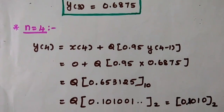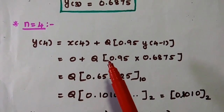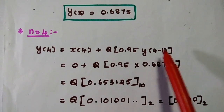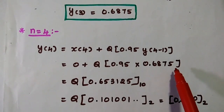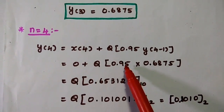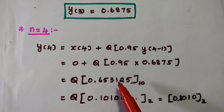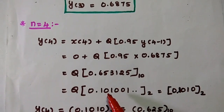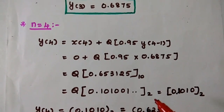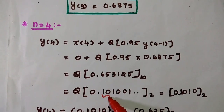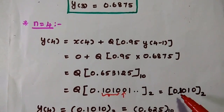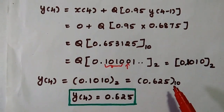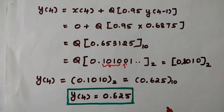For n equal to 4: y(4) = x(4) + Q[0.95·y(3)]. y(3) is 0.6875, and x(4) is 0. Multiplying gives 0.653125. The binary equivalent is 0.101001. The 5th bit is 0, so we take the 4 bits as-is. The decimal equivalent is 0.625. So y(4) is 0.625.